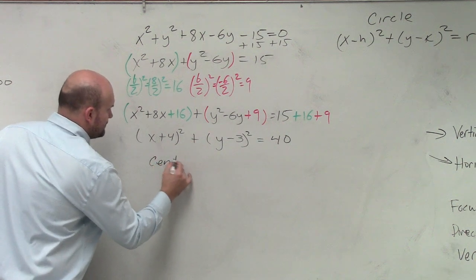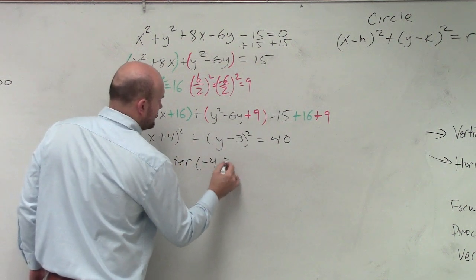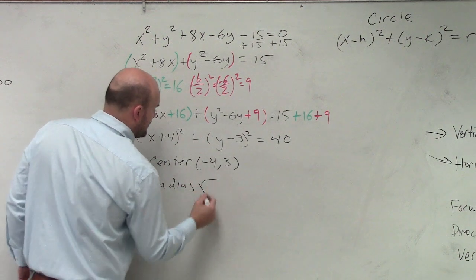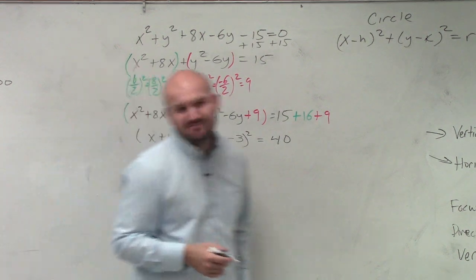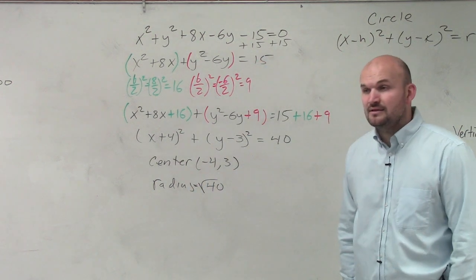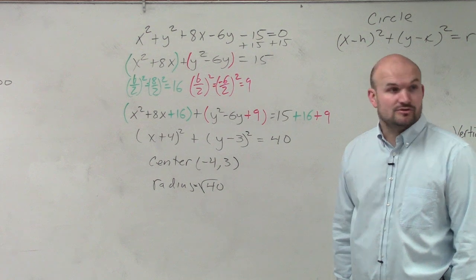Therefore, my center is negative 4, 3. My radius is the square root of 40. I could probably simplify my square root of 40, so that would be 2 square root of 10.